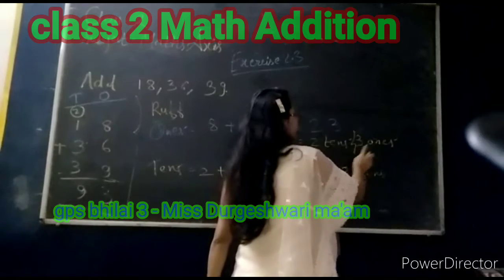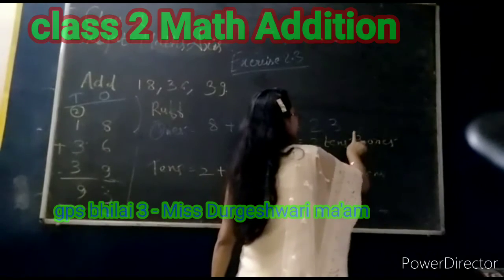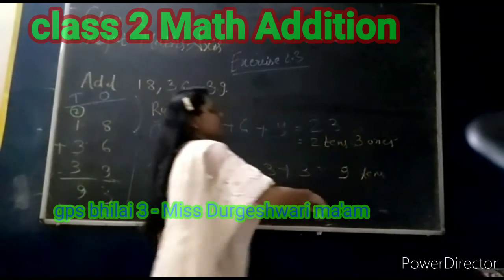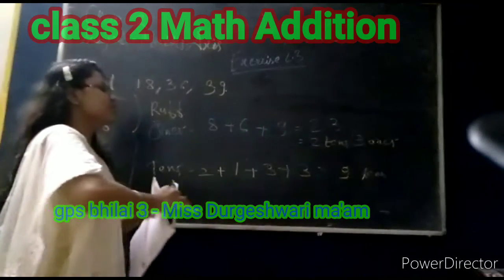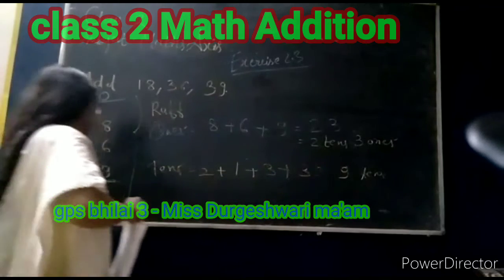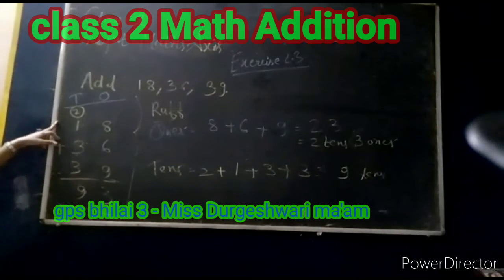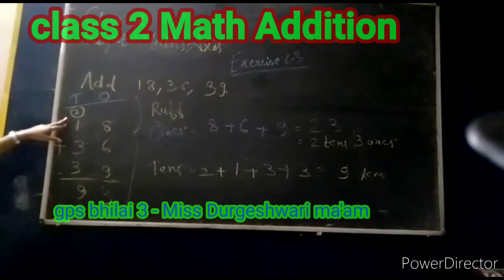That is 3 ones. So 3 will go in the ones place, and 2 will be carried over in the carry column.